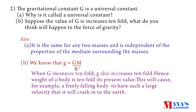G is called a universal constant because it is independent of the properties of the medium surrounding the masses. The gravitational force depends on the masses and distance, but G remains the same constant for any two masses.